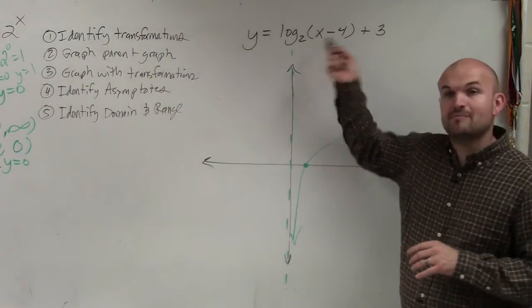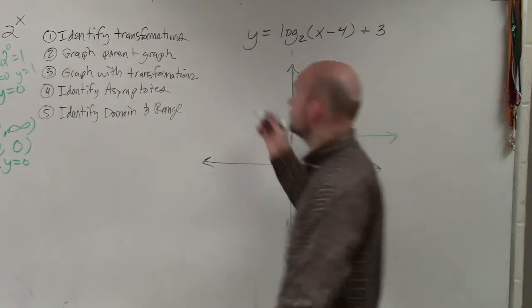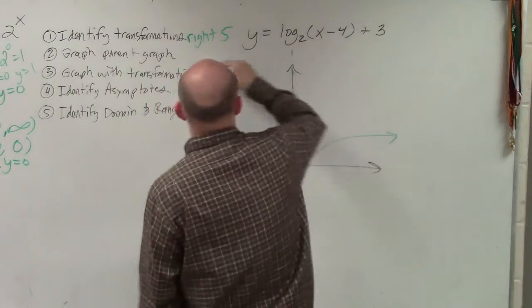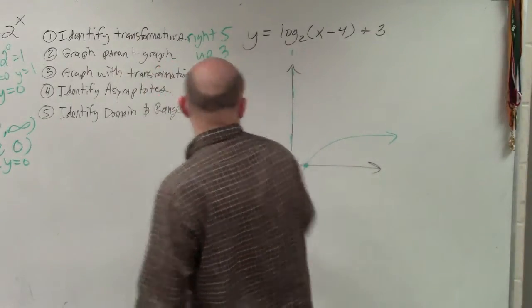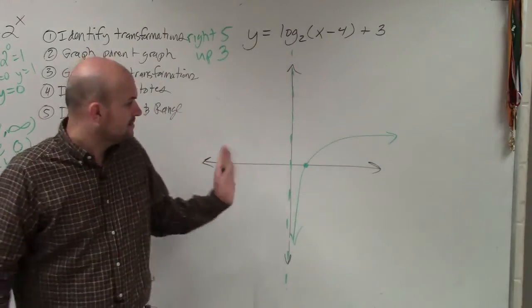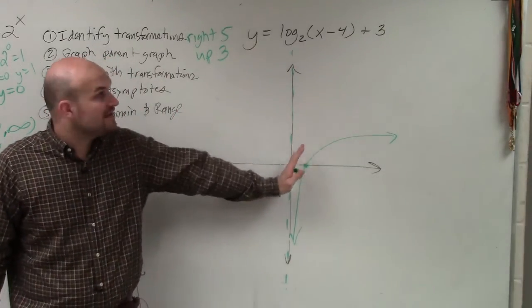So here, we have minus 4. Remember, it's the opposite. So that's going to be move right 5. And plus 3 tells us to go up 3. So the only thing I showed you with logarithms is to shift your graph right 5 and up 3.